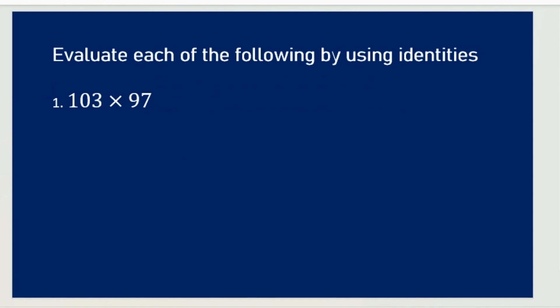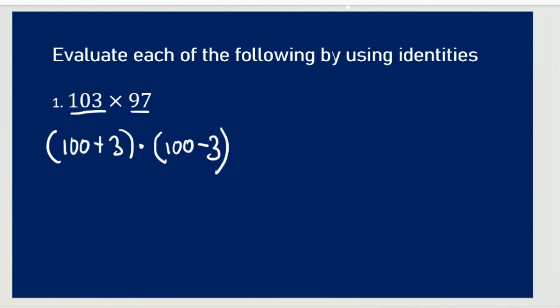Now, here is the first question: 103 times 97. So how could you write 103? We can write it as 100 plus 3, then times 97, which we can write as 100 minus 3. So this expression — what formula do you think of? Normally people should be thinking of A squared minus B squared, because A squared minus B squared equals A plus B times A minus B.